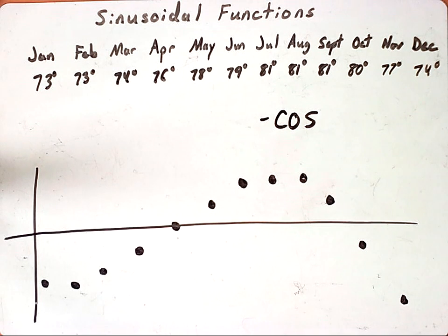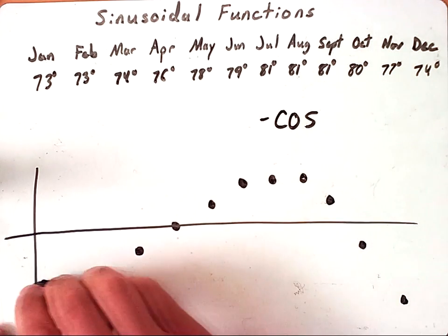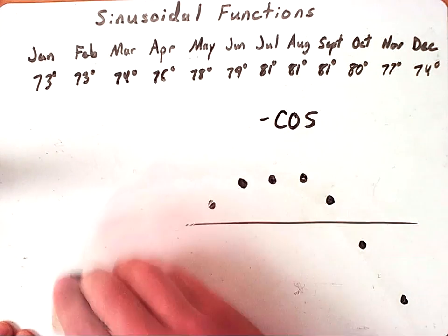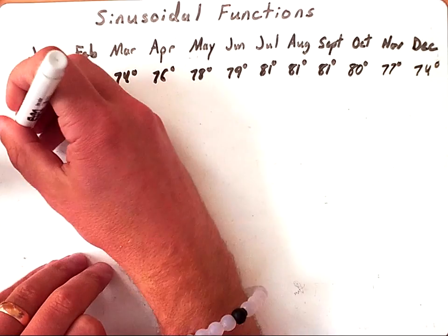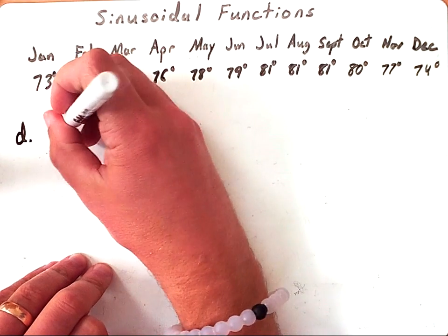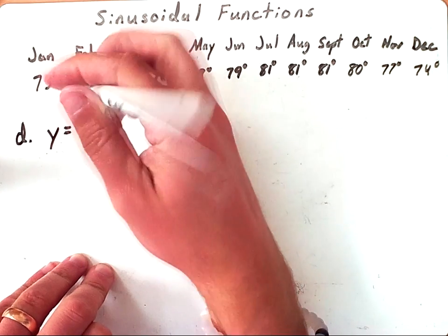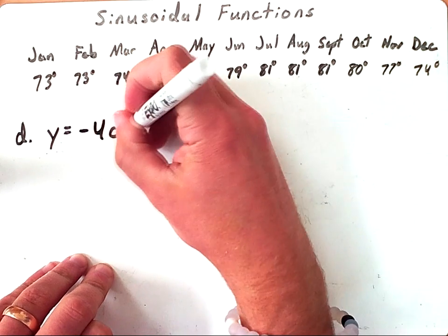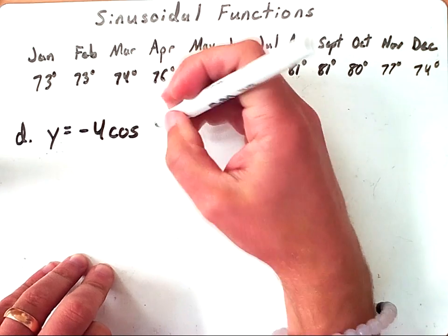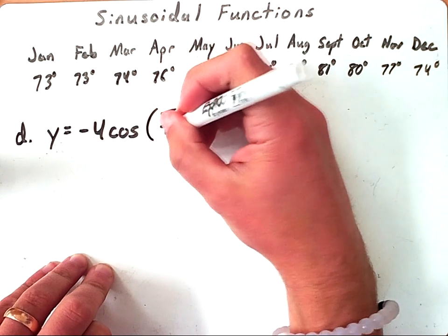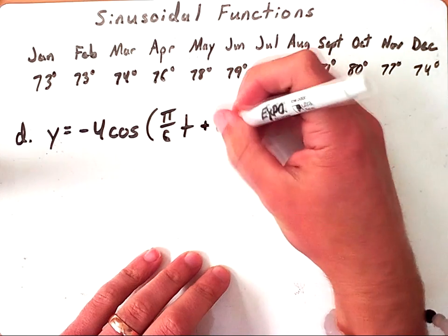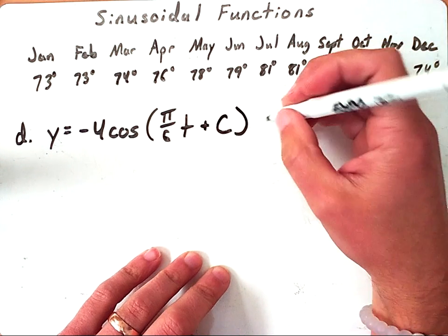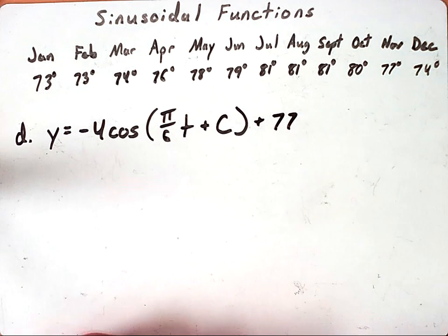For step D we want to write the equation of the function. So far I have Y equals negative 4 because it was a negative cosine, 4 was our amplitude, and we had a negative cosine graph of π over 6t. We're using t in place of theta right now because we're dealing with a unit of time. We don't know what our phase shift is so we're just going to put C and then plus 77 which was our vertical shift.